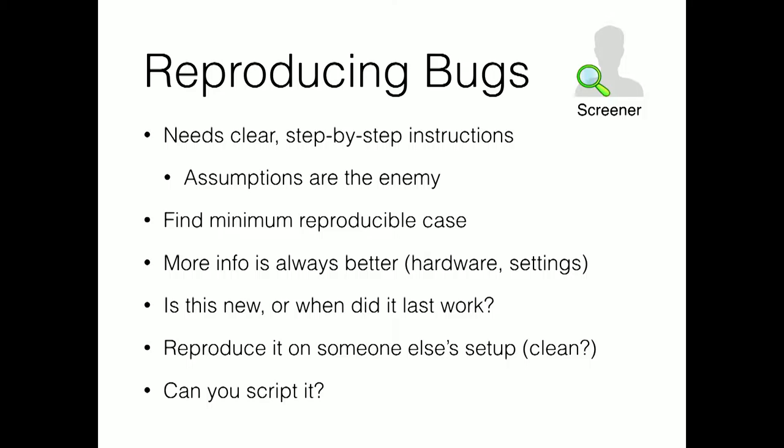Reproducing bugs — a screener needs a clear, concise way of getting to this bug, assuming that's possible. They need step-by-step instructions: I did this, then I did that, then I did this, then I did that. I expected to get A, but I got B. This allows them to follow your line of thinking very clearly.